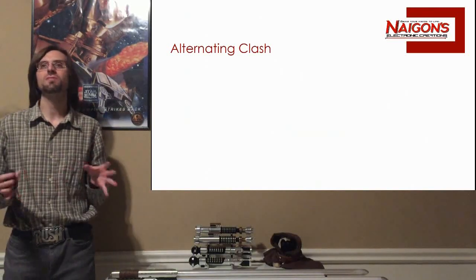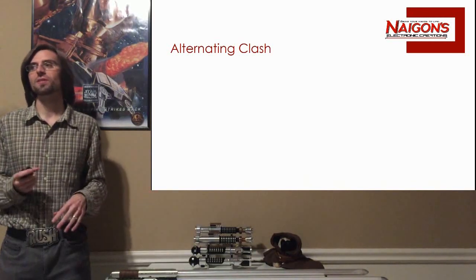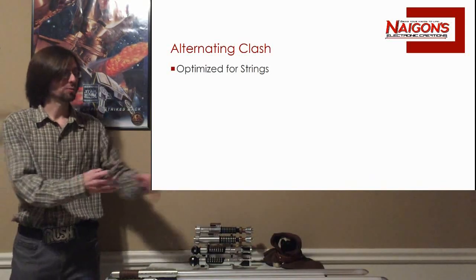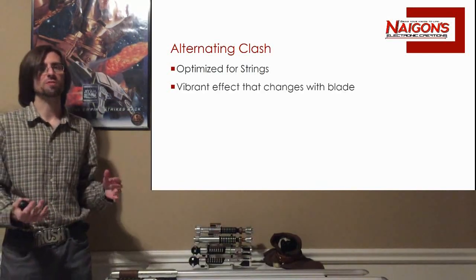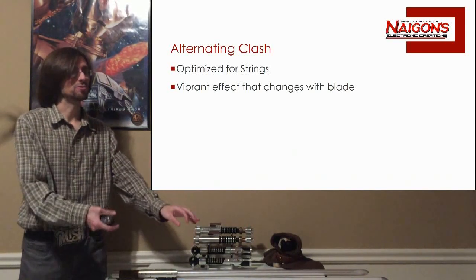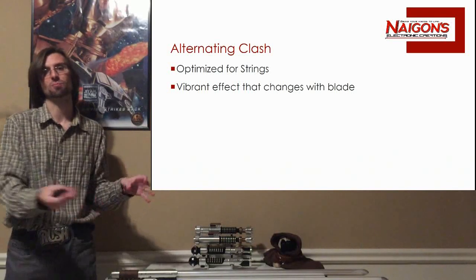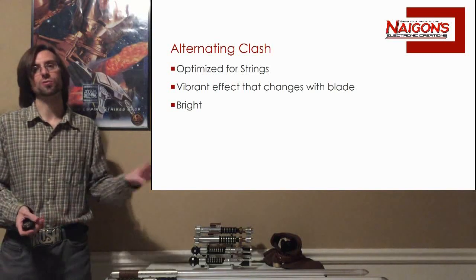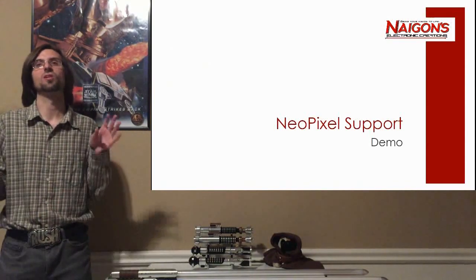And there's alternating clash. This isn't a new feature specific to this release but it is optimized for string blades. Unlike the normal LED where you just get color changing from high to low, with string blades you also get variations up and down the blade. It's a vibrant effect with very changing colors, and it changes per blade setting — so as you do dual phase and change your blade, the clash looks different even though the clash color is the same. It's super bright too. You'll see this in the upcoming demo — I think you guys are going to love this.